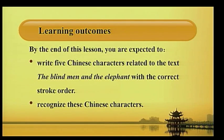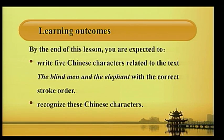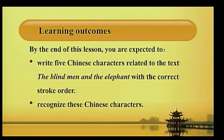Learning Outcomes. By the end of this lesson, you are expected to write five Chinese characters related to the text 'The Blind Man and the Elephant' with the correct stroke order, and recognize these Chinese characters.